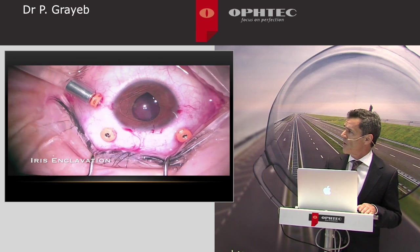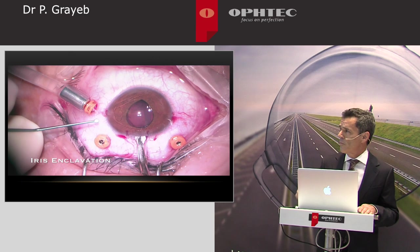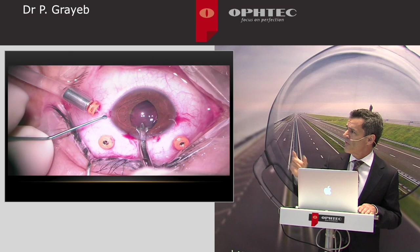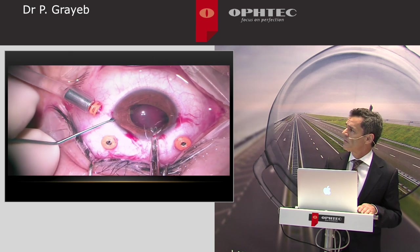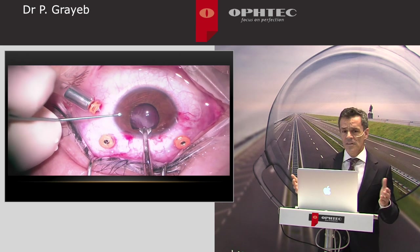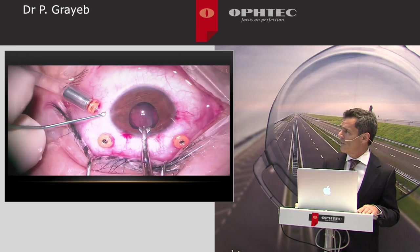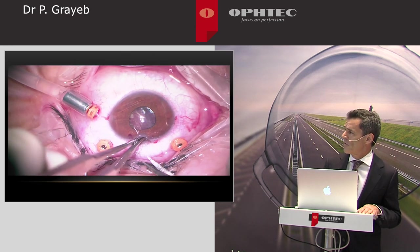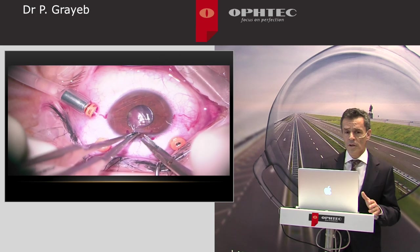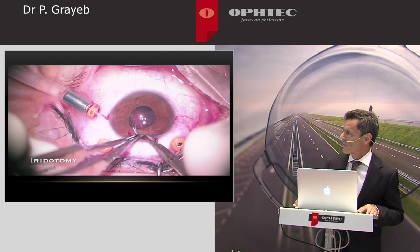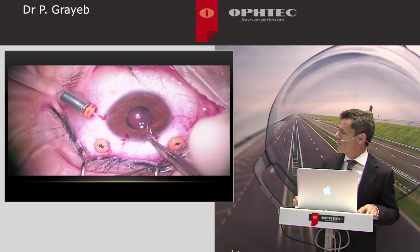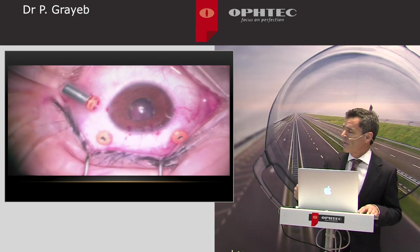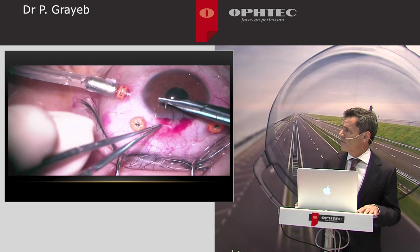And as you see, it's very easy to enclavate. You will be surprised how easy it is. Then you do the same thing on the other side, and that's the surgery. I like to perform an iridotomy to avoid a pupillary block. Then you have to wash the OVD and close the main incision with separate stitches.